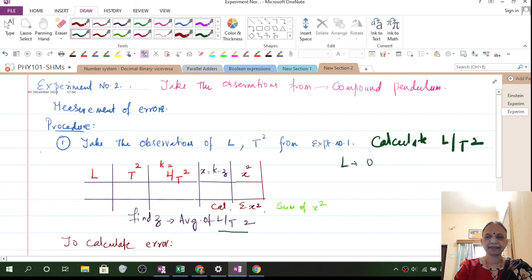Your L is varying from 0.1, 0.2, 0.3 etc. up to 1 meter. Here you have 0.1, 0.2 like that. In each case you calculate T square. Calculate L by T square. Find the average of L by T square. That you call it as Z.